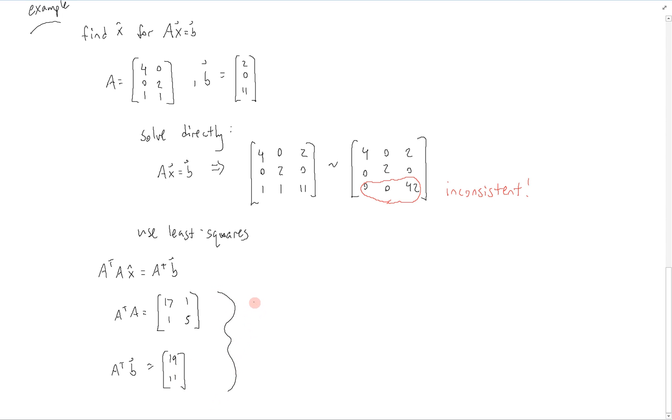And now we just formulate our system as usual. We have 17, 1, 1, 5 times x hat is equal to 19, 11. So we get our usual system of equations. But now we're guaranteed that this system is going to be consistent. We formulate it once again in our usual augmented form. And we'll reduce it to get this. So we see that x hat is equal to 1, 2.